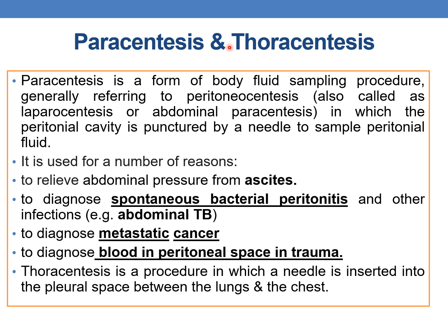Paracentesis is a body fluid sampling procedure — generally referred to as peritoneal paracentesis, also called laparocentesis or abdominal paracentesis — in which the peritoneal cavity is punctured by a needle to sample peritoneal fluid. It is used to relieve abdominal pressure from ascites, to diagnose spontaneous bacterial peritonitis and other infections (e.g., abdominal TB), to diagnose metastatic cancer, and to diagnose blood in the peritoneal space in trauma. Thoracentesis is a procedure in which a needle is inserted into the pleural space between the lungs and chest wall for body fluid sampling. 'Centesis' means to puncture.